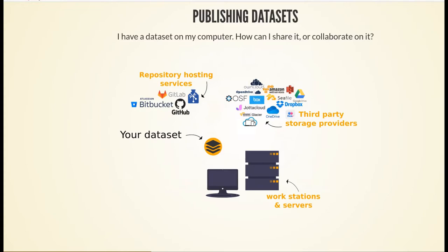There are three major locations involved in publication. One is repository hosting services — major ones include GitHub, GitLab, Bitbucket, and GIN. Another is third-party storage providers: free or commercial cloud infrastructures that host your data in the cloud, like syncing phone photos to Google Cloud. And the third is the computer infrastructure you have access to — your local machine, workstation, desktop, or a server. The question is how to get a dataset on your local computer to interact with all these locations.